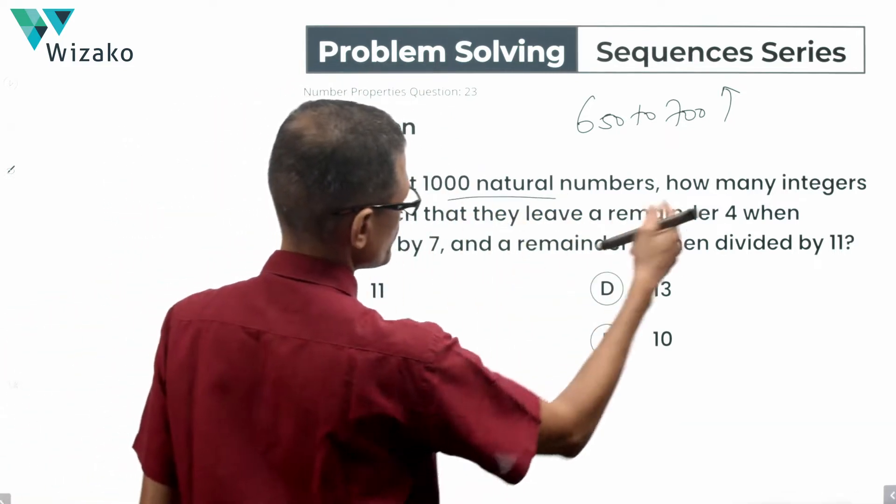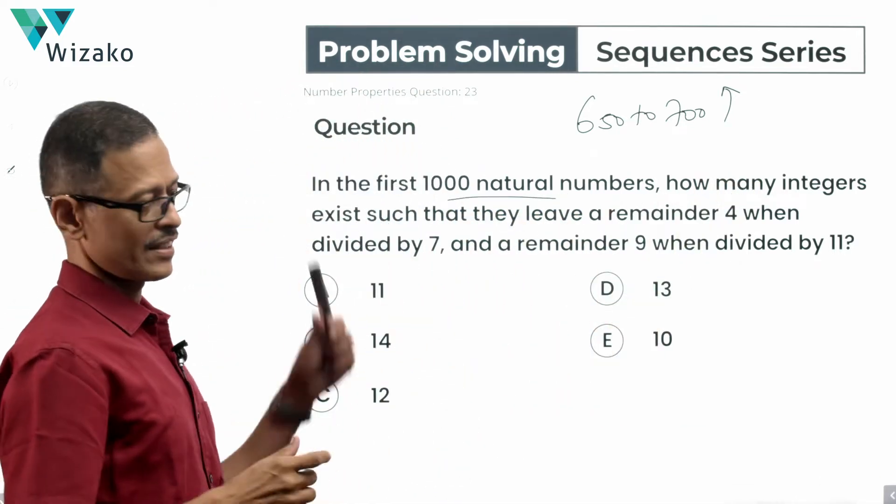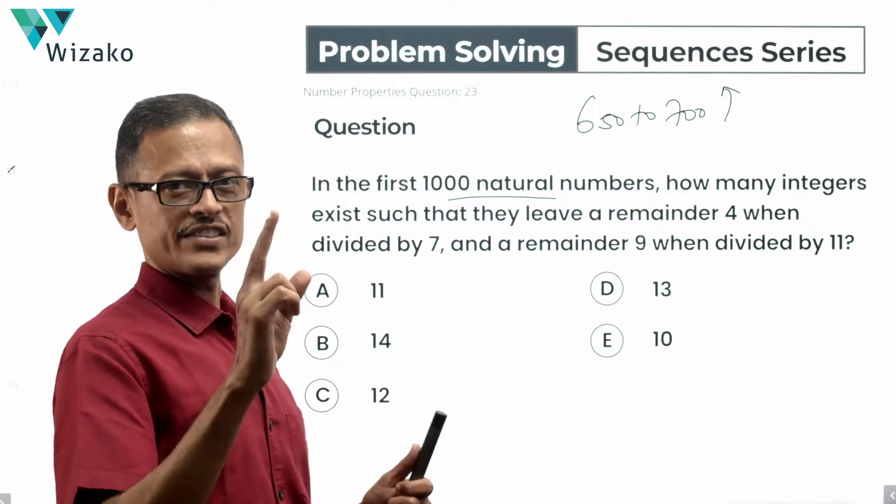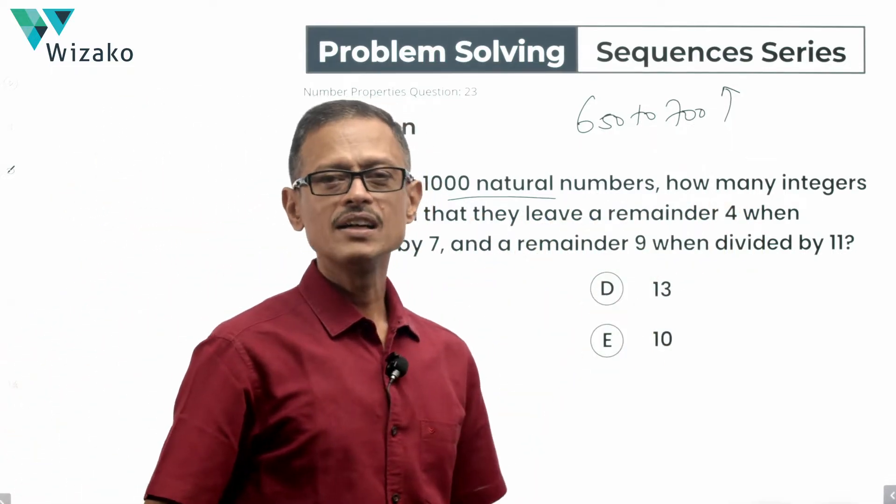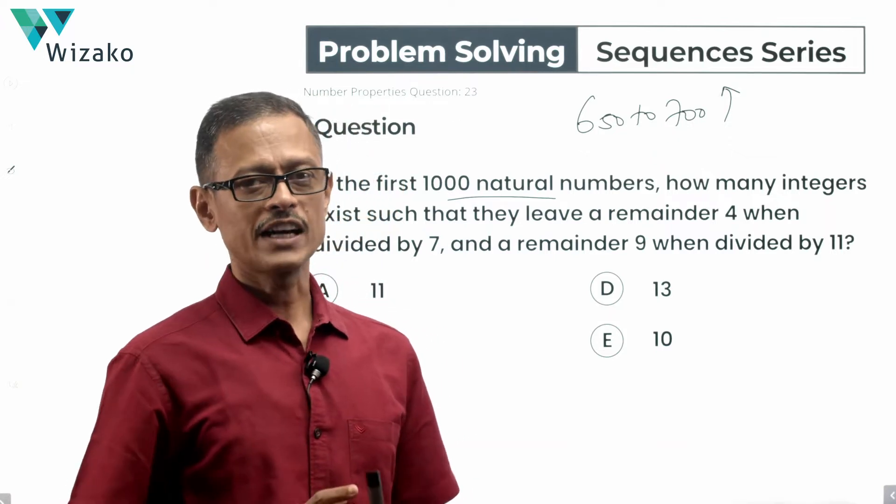In the first thousand natural numbers, how many integers exist such that they satisfy two conditions. The first one, the number should leave a remainder of 4 when divided by 7 and should leave a remainder of 9 when divided by 11.